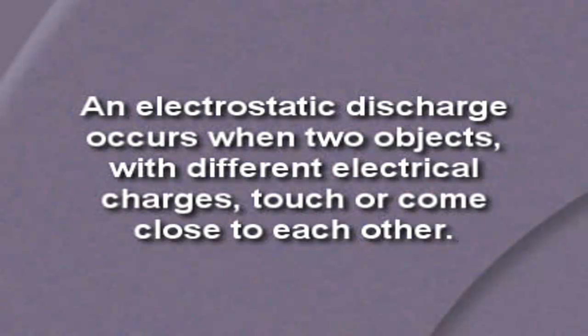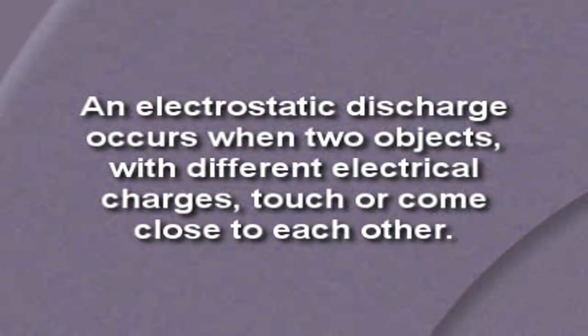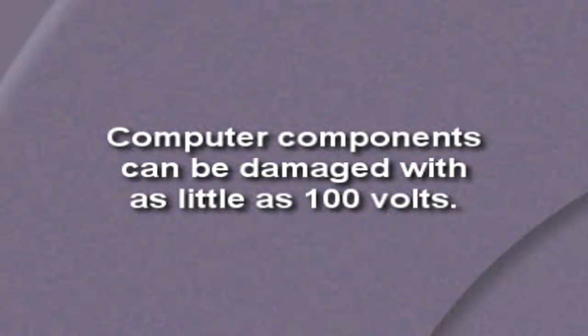An electrostatic discharge occurs when two objects come together that have different charge levels. If one object has a really high positive charge and another has a really high negative charge, the charge flows from the object with the higher electrical potential to the object with the lower potential. You see and hear a shock. As a PC tech, you need to understand that a computer component such as a memory chip or a CPU can be damaged by an electrostatic discharge as small as 100 volts or less.